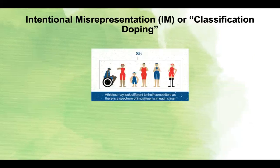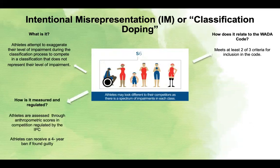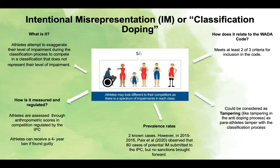The first para-specific cheating method is intentional misrepresentation, or classification doping. This is where an athlete over-exaggerates their level of impairment during the classification process to compete in a class that does not truly represent their level of impairment, therefore increasing the likelihood of that athlete potentially getting a medal. It is measured through assessments pre-competition regulated by the International Paralympic Committee. If an athlete is found to be guilty of intentionally misrepresenting their disability, they face a ban of up to four years, like doping.